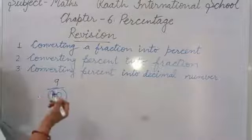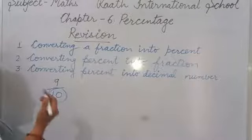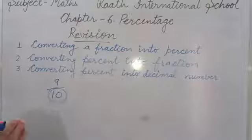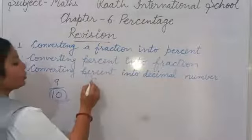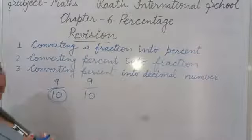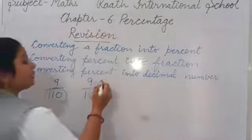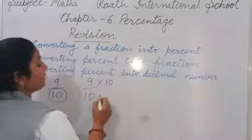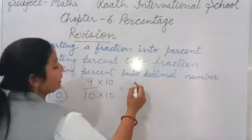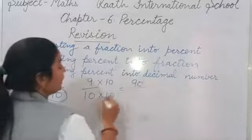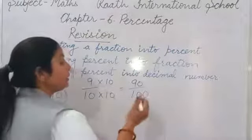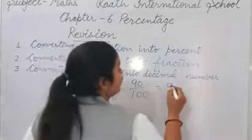We have to make its equivalent fraction and multiply by such a number so the denominator becomes 100. For 9 upon 10, in the 10 times table, 10 times 10 is 100, so we multiply both numerator and denominator by 10. 9 tens are 90 and 10 tens are 100, so it becomes 90 upon 100.